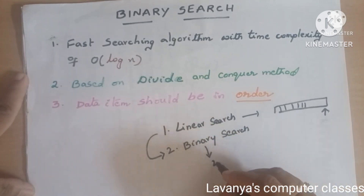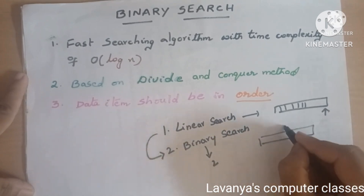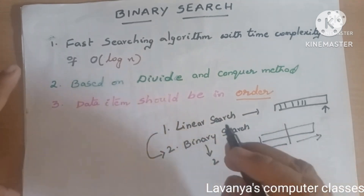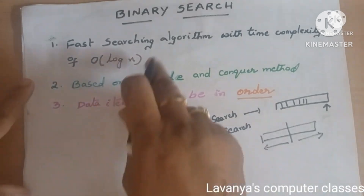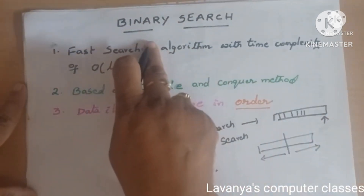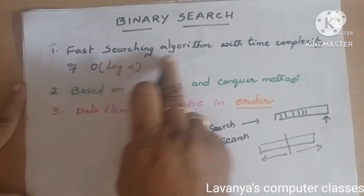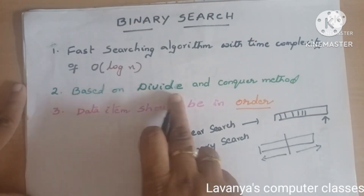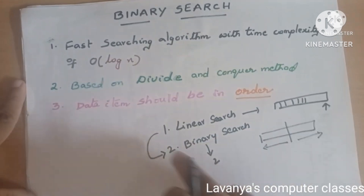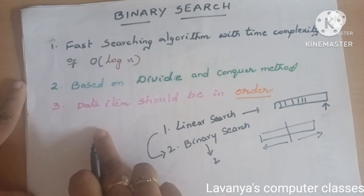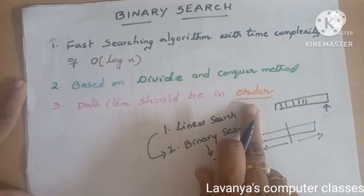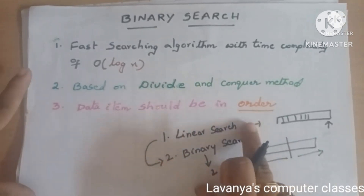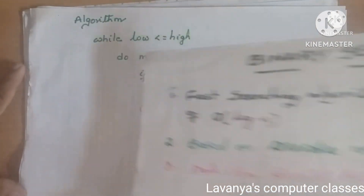What is binary? Binary means two. Here, the list of elements will be divided into two parts — we search either in the left part or the right part. That is why the number of iterations are almost halved, making binary search a fast searching algorithm with time complexity of O(log N). Binary search is a good example of the divide and conquer strategy. One important point: all data items should be in order — sorted — if you want to search using binary search. This is very important.